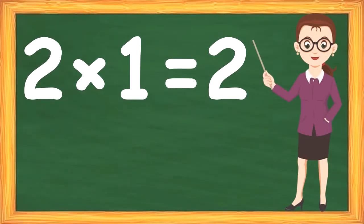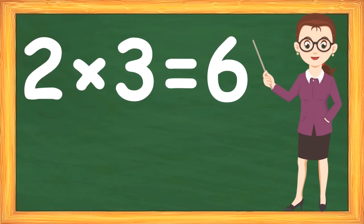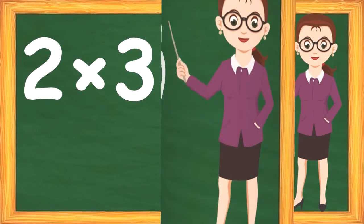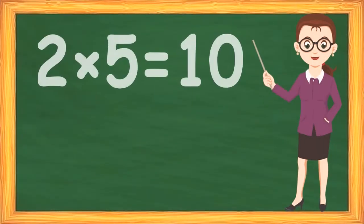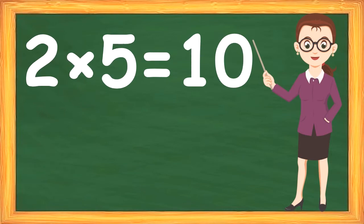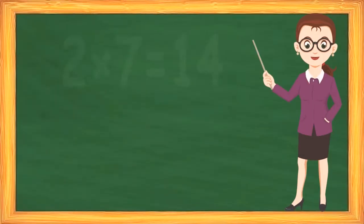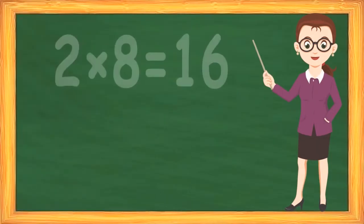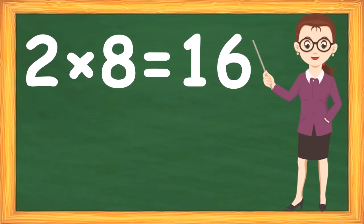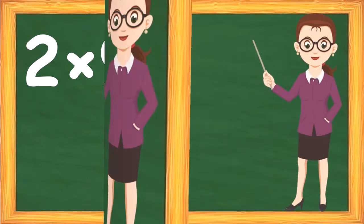2 1s are 2, 2 2s are 4, 2 3s are 6, 2 4s are 8, 2 5s are 10, 2 6s are 12, 2 7s are 14, 2 8s are 16, 2 9s are 18, 2 10s are 20.